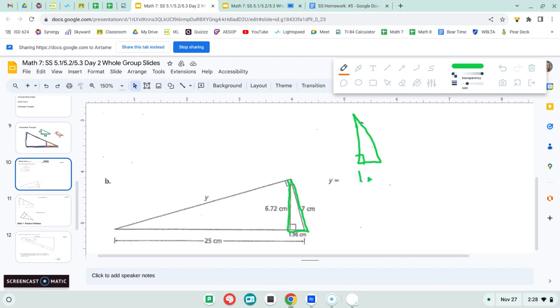So I have 1.96 on the bottom, 6.72 on the side, and then seven for the long side. And then we have this big triangle here.